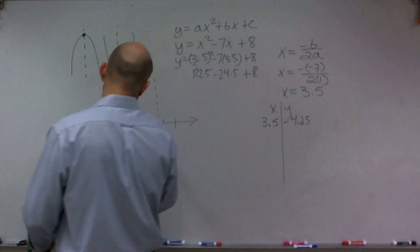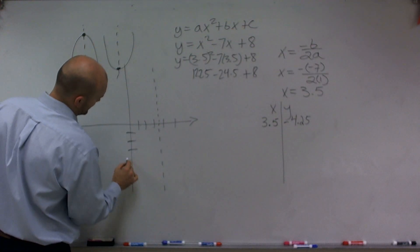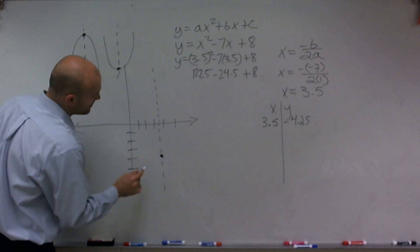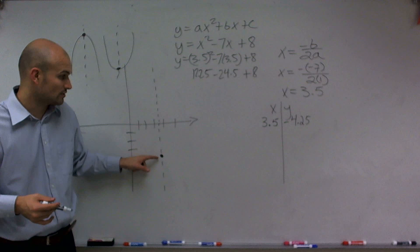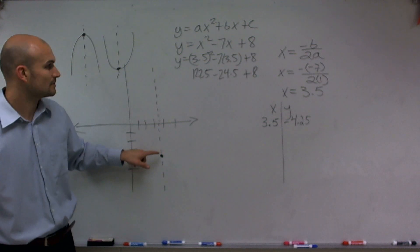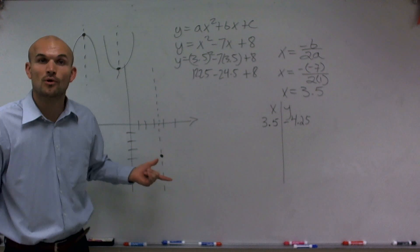So what I'm going to do is I'm going to sketch that graph. So it's going to be roughly right around here. So that means my vertex, the low point or high point right now on my graph, is at 3.5, negative 4.25.